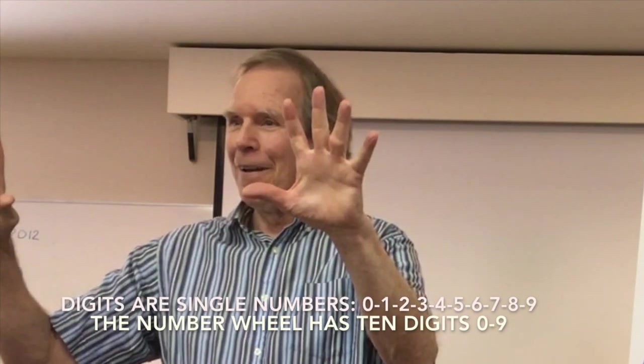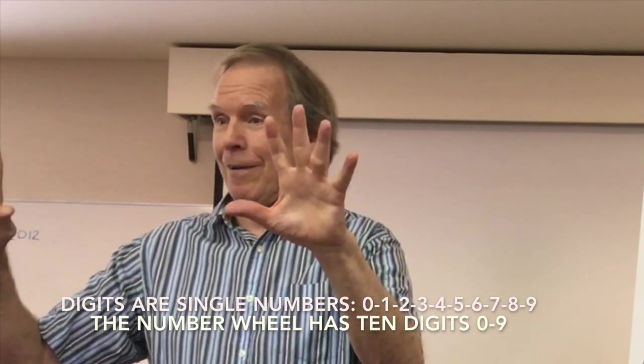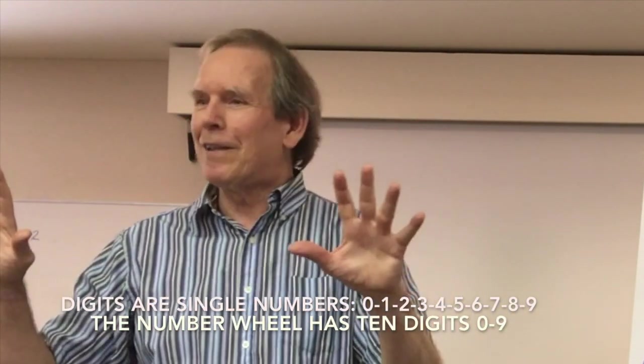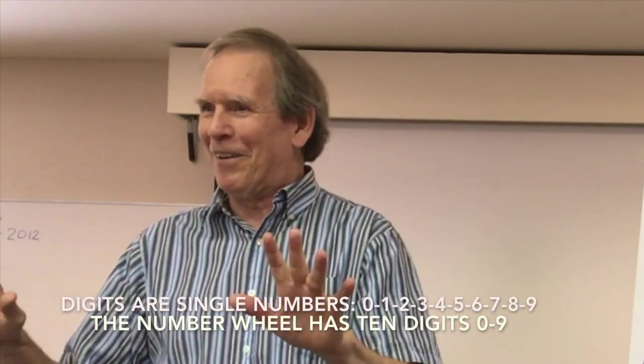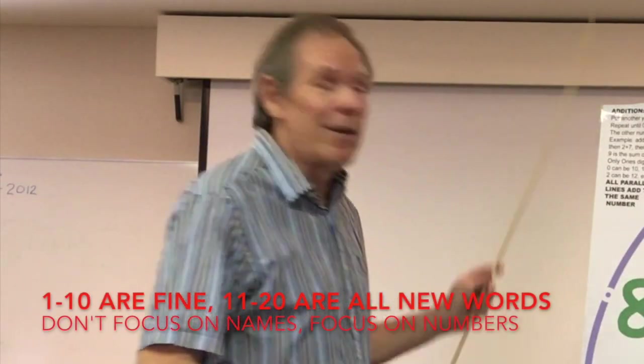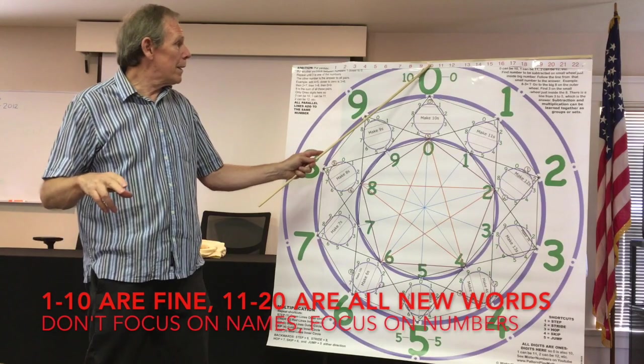We have 10 fingers, which are 10 digits. And the reason that they're both called digits is we learn to count on our fingers from way back from the beginning of time.